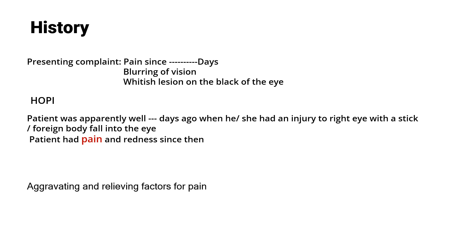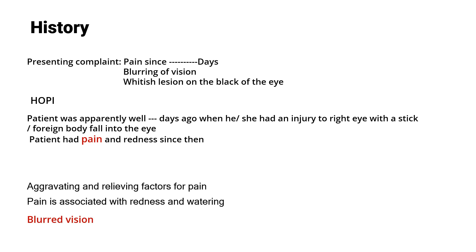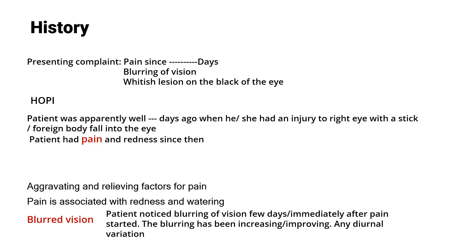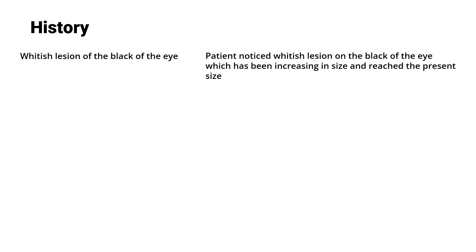Ask about aggravating and relieving factors for pain — whether medication, exposure to sunlight, or sleep affects it. Pain is usually associated with redness and watering. Blurred vision follows, and you ask whether it's been increasing or improving, and any diurnal variation. The third symptom is a whitish lesion on the black of the eye, which has been increasing in size to reach the present size.